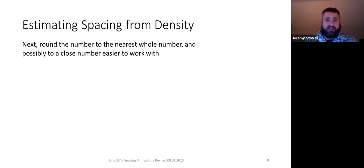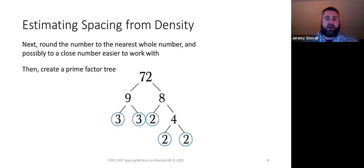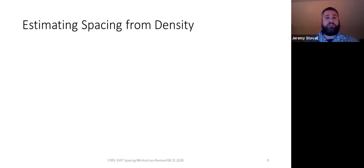You need to round that number to the nearest whole number — you may even need to round it a little further. The next step is to create a prime factor tree. A prime factor tree continues to divide a number by whole numbers until all factors are reduced to prime numbers. Here's the prime factor tree for 72: 9 times 8 equals 72; 3 times 3 equals 9; 2 times 4 equals 8; and 4 is 2 times 2. So 3 times 3 times 2 times 2 times 2 equals 72 — all prime numbers.